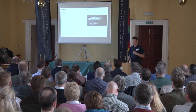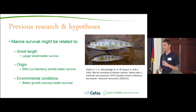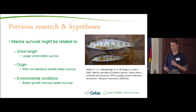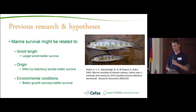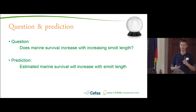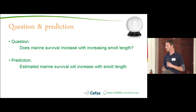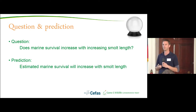What do we think marine survival is related to? There's a feeling — though I haven't found a great deal of hard evidence — that smolt length is a good correlate of the probability to return as an adult, or marine survival. The origin of your fish, whether wild or hatchery, may also affect its ability to survive at sea, and of course the environmental conditions they encounter at sea. Sea surface temperature and growth conditions when they hit the sea could be very important for their survival.